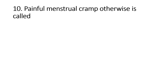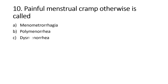Painful menstrual cramp is otherwise called: Option A, Menometrorrhagia; Option B, Polymenorrhea; Option C, Dysmenorrhea; Option D, Amenorrhea. Right answer is Option C, Dysmenorrhea. Dysmenorrhea means painful menstruation. Menorrhagia refers to excessive menstrual bleeding.